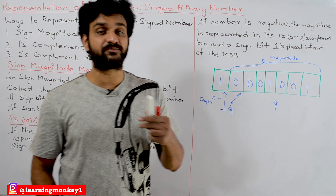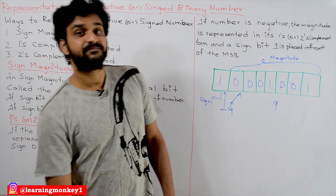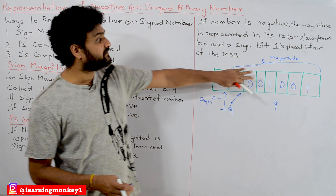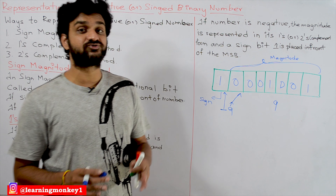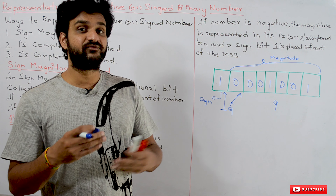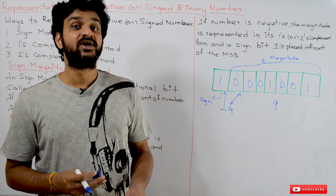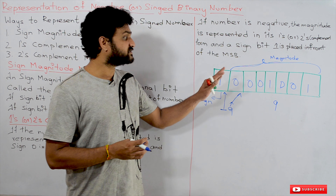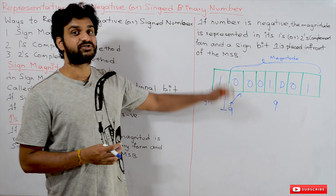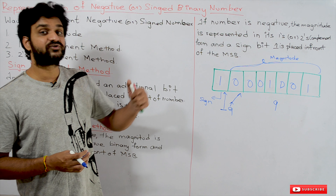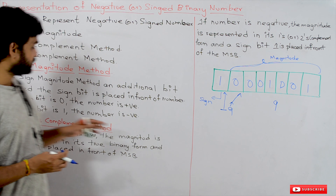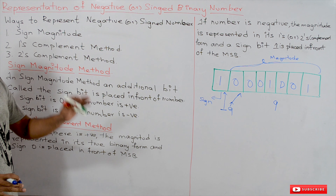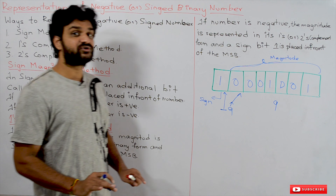The sign-magnitude method is not practical because if you use it, the hardware required is going to be very high — we have to use extra hardware for subtraction. That is the reason why the sign-magnitude method is not used practically. Most computers use either the one's complement or two's complement method, and mostly the two's complement method is used.